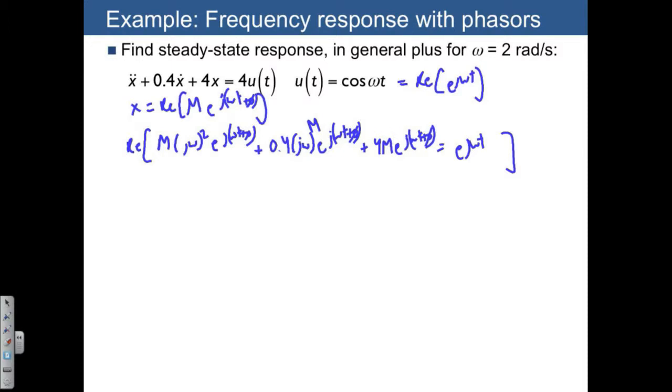Now notice that we can collect all of the m's, we can also collect all of the j phi's, and we can collect all of the j omega t's like this. And all of this gets multiplied by j omega squared plus 0.4 j omega plus 4 within the real part.